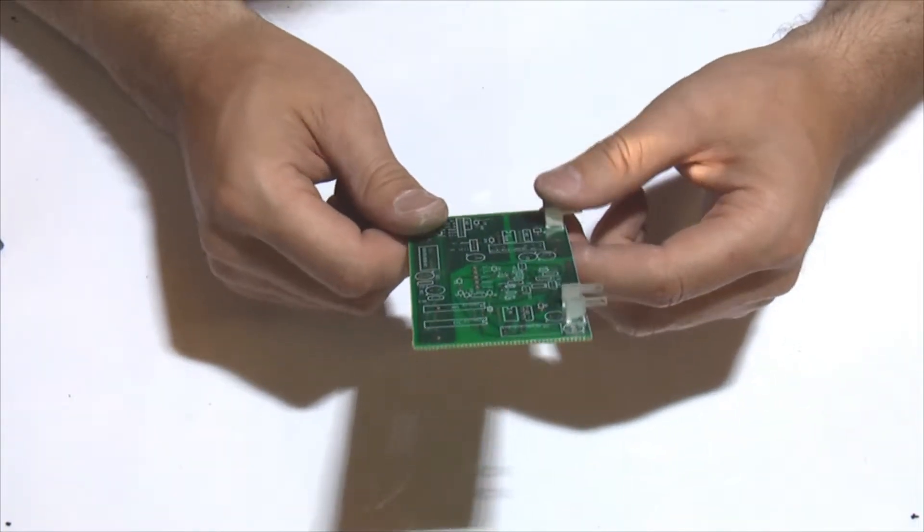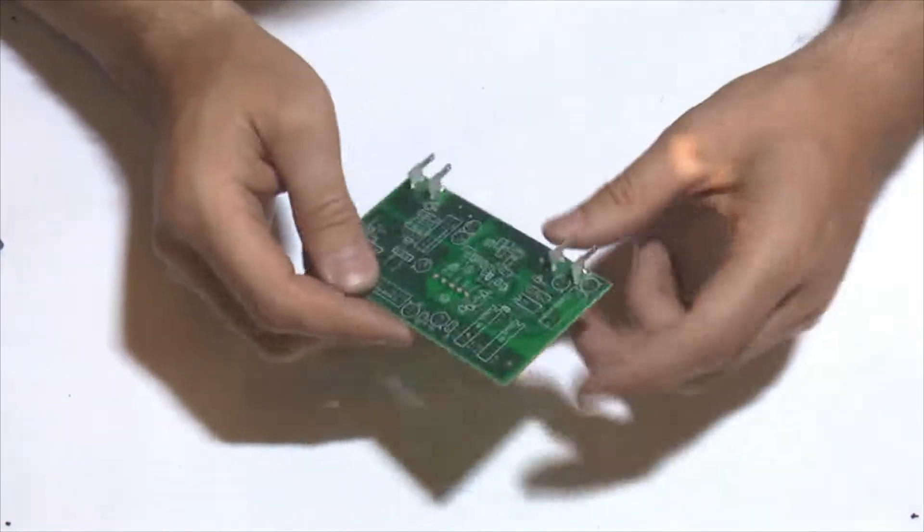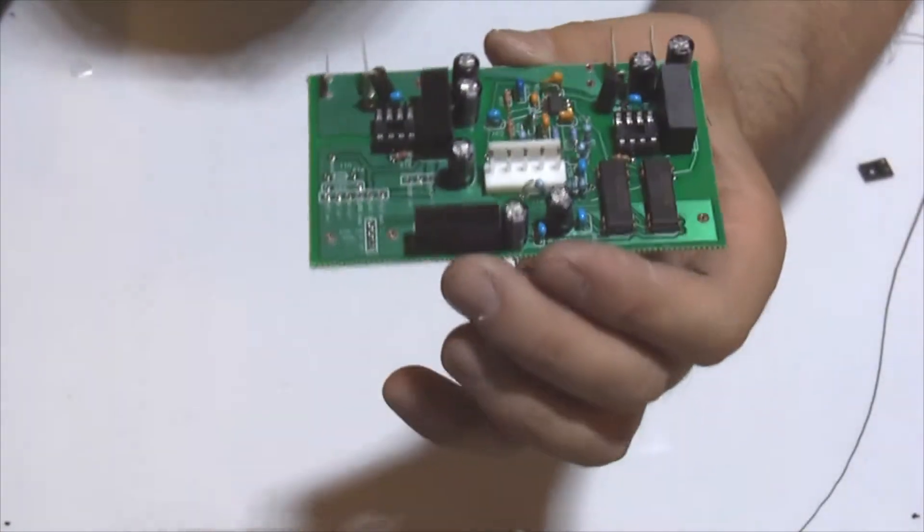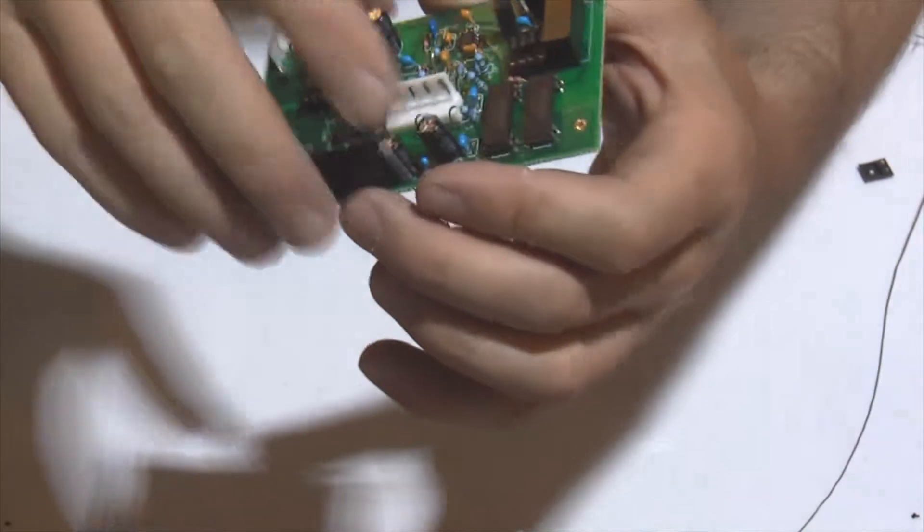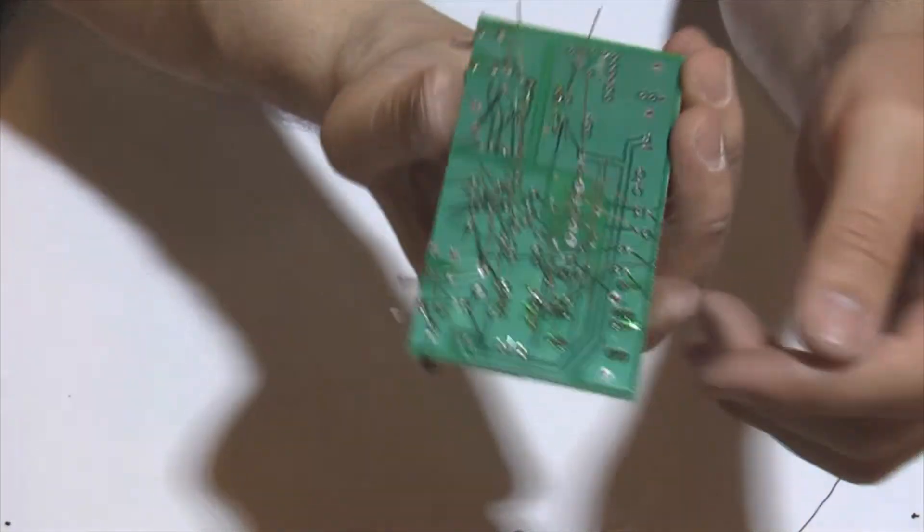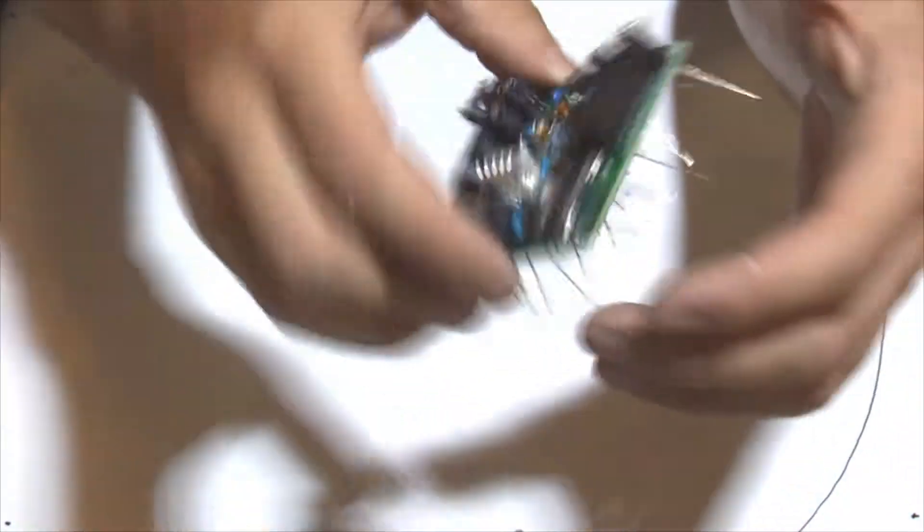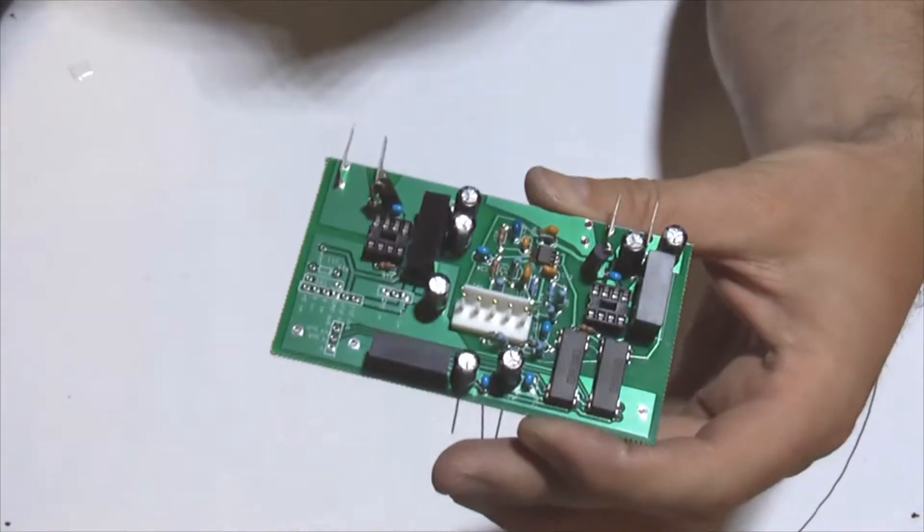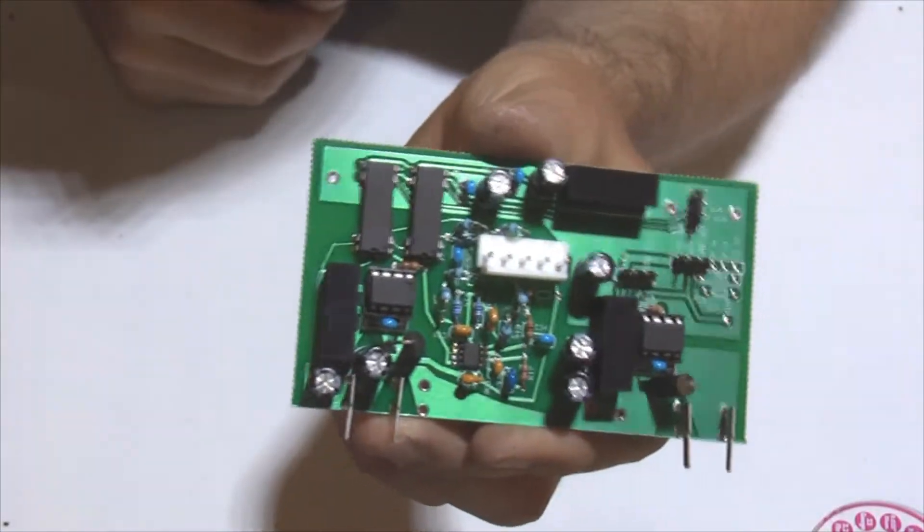So let's do that one first. Okay, so now everything is placed, all the components are placed and their leads are bent on the back so that they don't fall out. So I can turn over and solder. This is what we're gonna do next, and this is gonna complete this board.